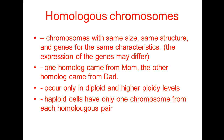Homologous — homo means same — so homologous chromosomes are chromosomes that are essentially the same. They have the same size, the same structure, and genes for the same characteristic. Where they can differ is in the expression of these genes. Within a homologous pair, one homolog came from mom, the other is a copy of the chromosome you got from dad. Homologous chromosomes exist only in a diploid or higher ploidy level — you cannot have them in a haploid, because in a haploid you have only one chromosome from each homologous pair.